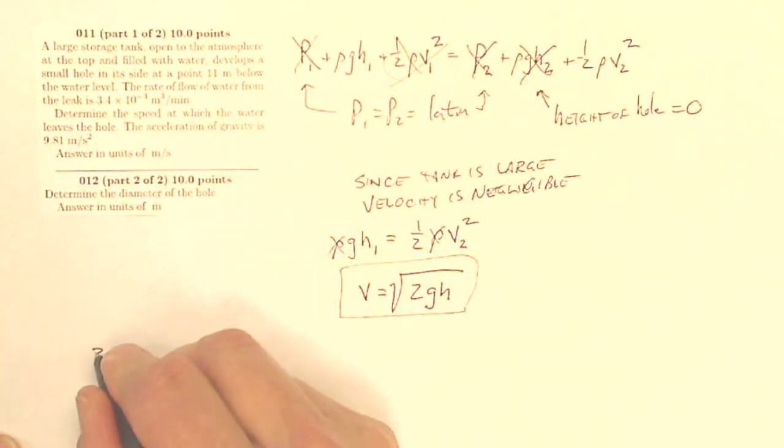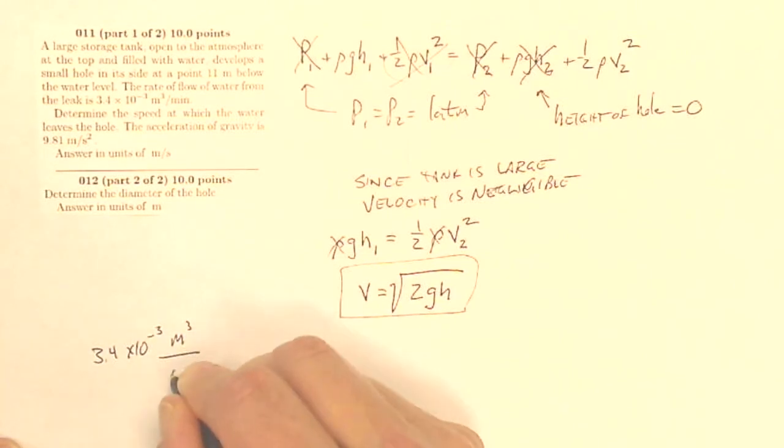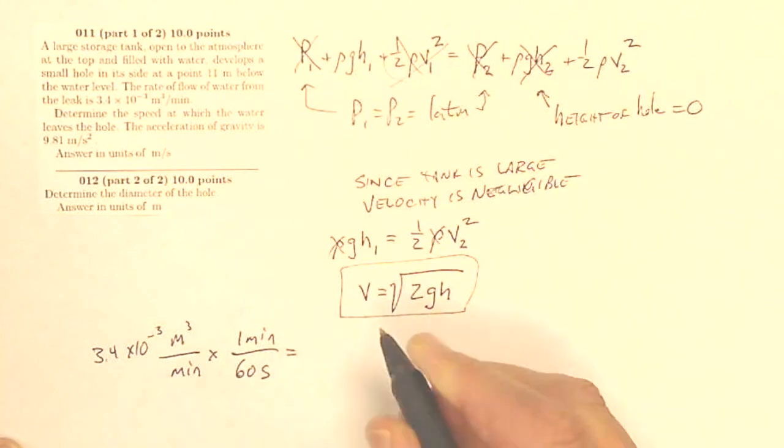So what I'm given is 3.4 times 10 to the minus third meters cubed per minute. Now I don't like minutes, I like seconds, so I'm going to do that: one minute is 60 seconds, and this will give me a flow rate in meters cubed per second.